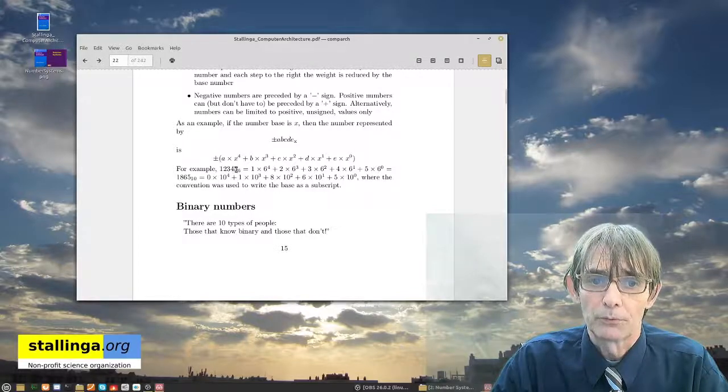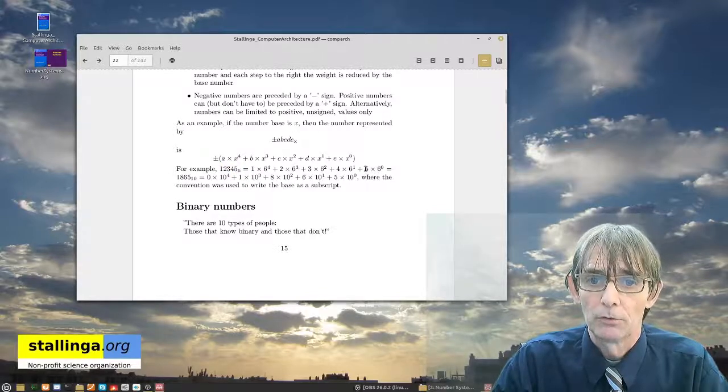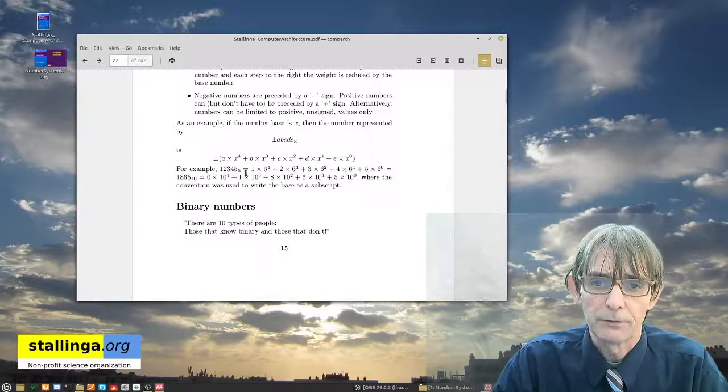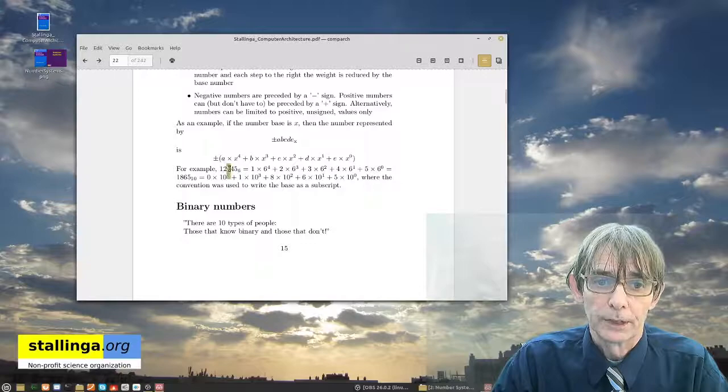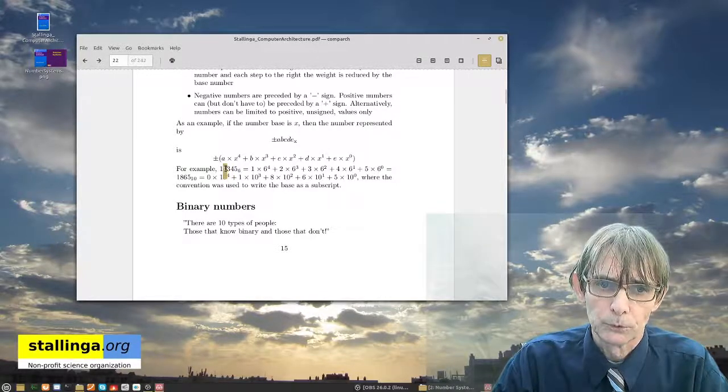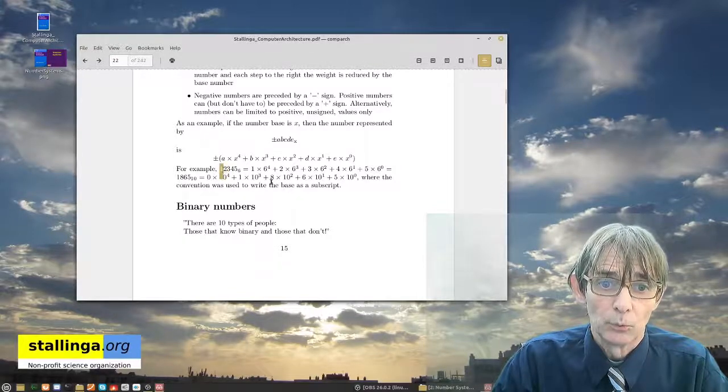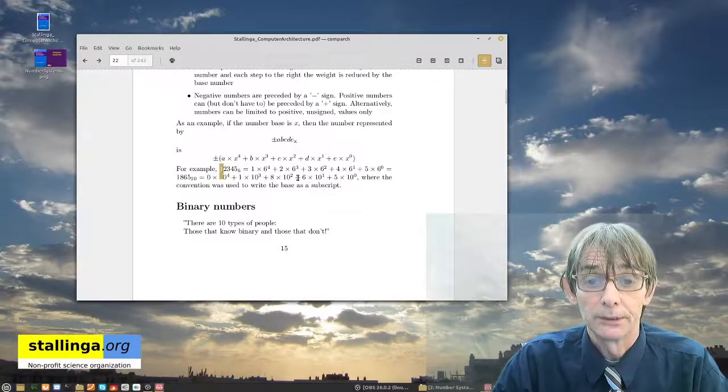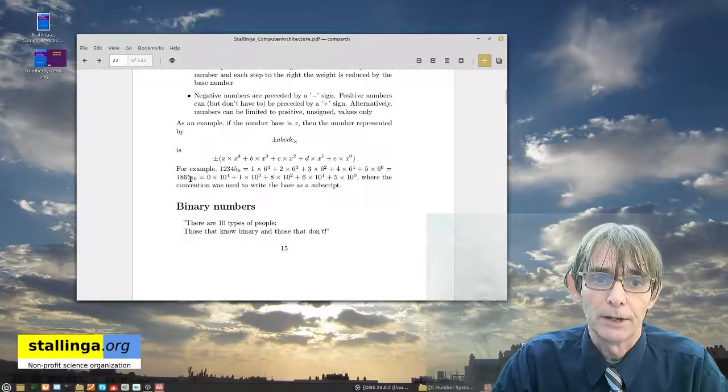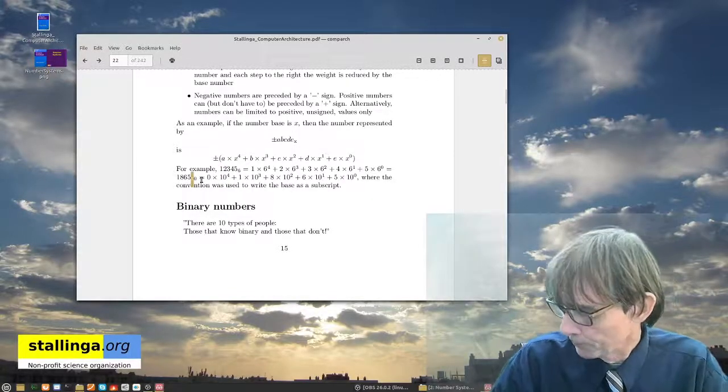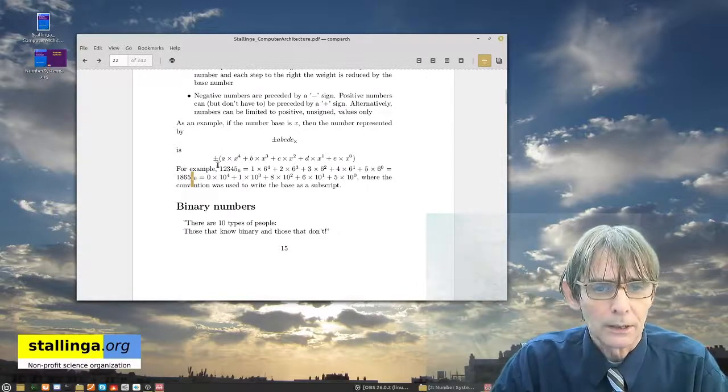To give you an example, one, two, three, four, five in base six is simply five times six to the power zero, which is five, plus four times six to the power one plus three times six to the power two plus two times six to the power three plus one times six to the power four. And if you do this in the decimal system calculation, as you all know, this would be one thousand eight hundred sixty-five in the decimal system. So this is how we can actually learn from that.